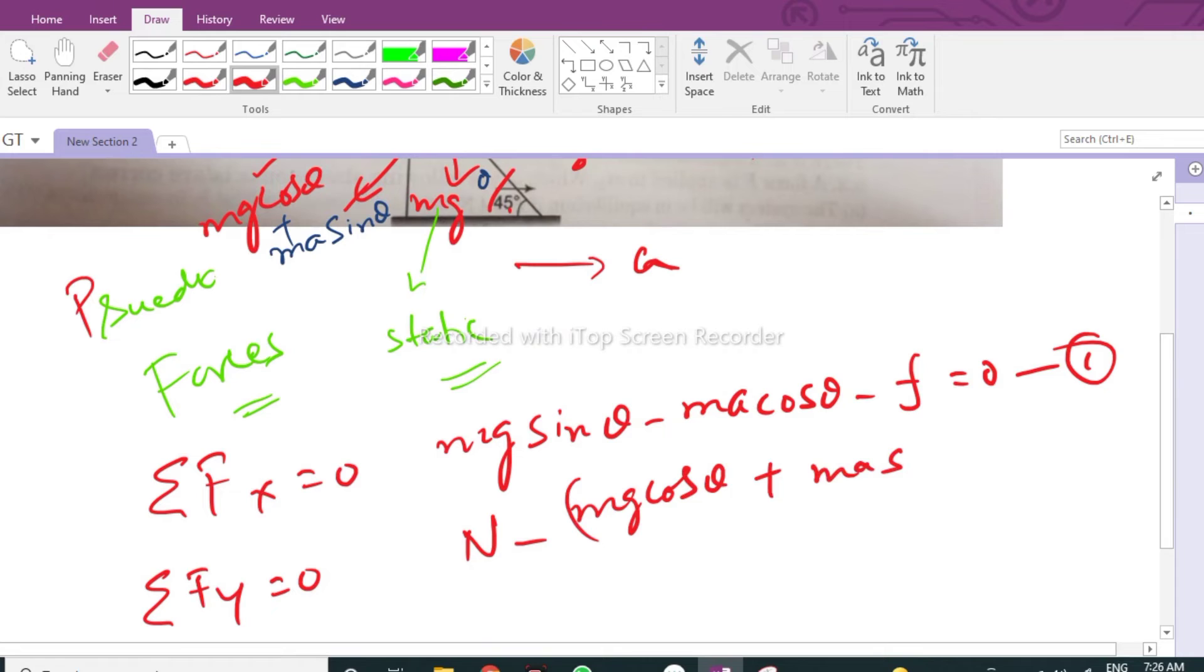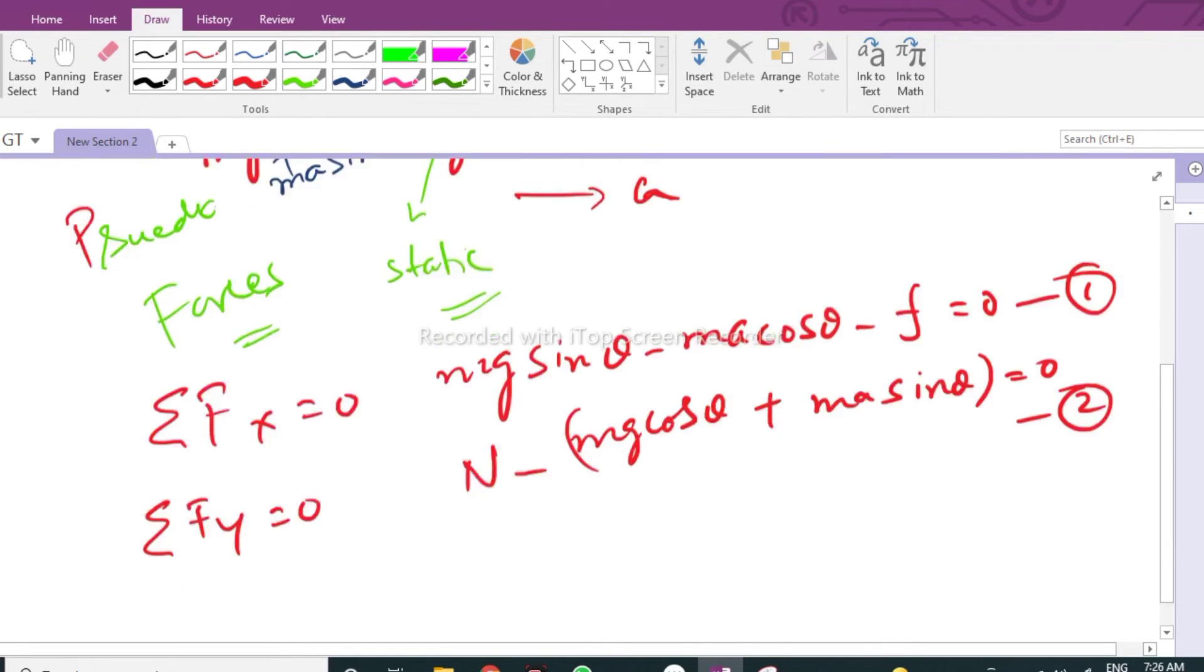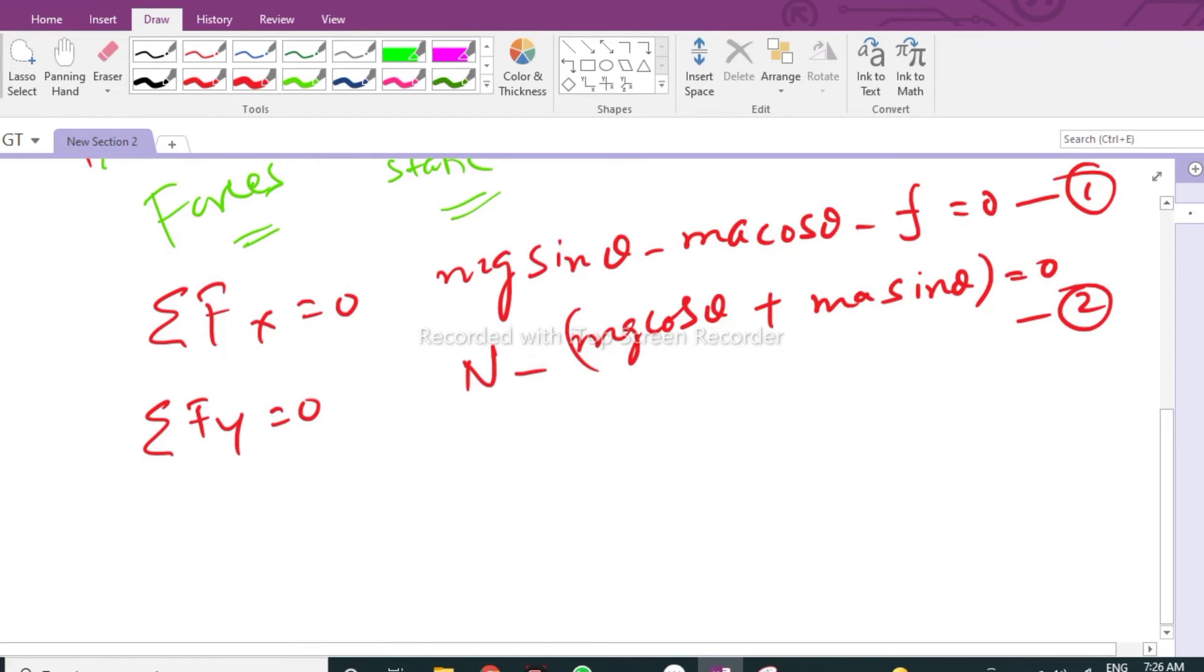Plus ma sine theta equals zero. This is our equation two. We also know that friction is equal to mu times N, where mu is the coefficient of friction. So from the second equation, we can calculate the value of N and put it into the first equation.